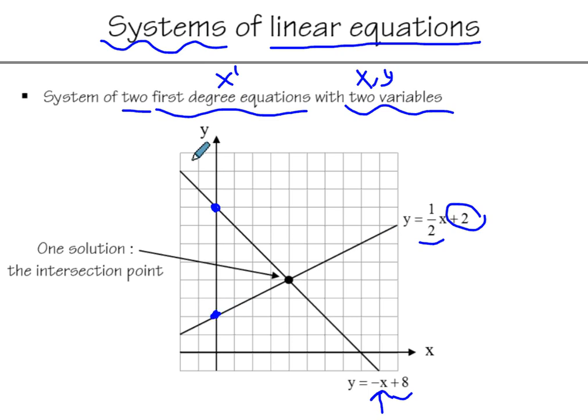So when you have a system of two equations, they're going to meet in one point. And that's what we call the intersection point. And that's what we call the solution. So if I ask you to solve this system, then the answer you have to give me is a coordinate.